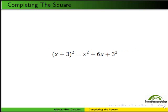Let's rewrite the 9 as 3² and look at it in this form. So here we have (x + 3)² = x² + 6x + 3².